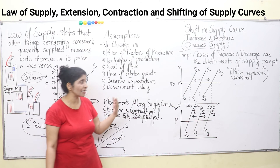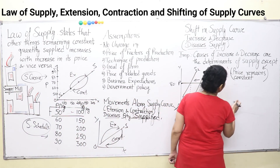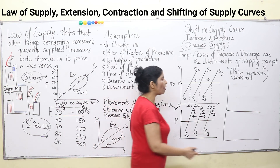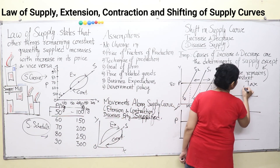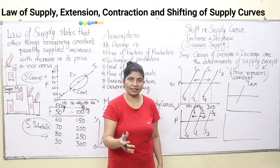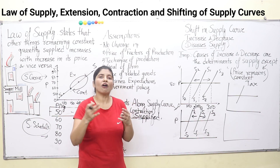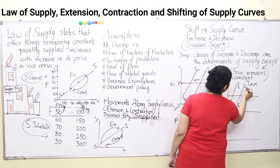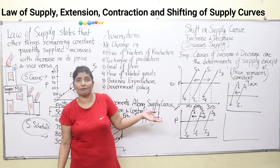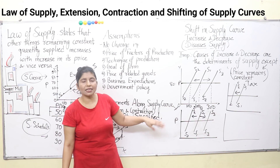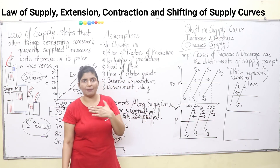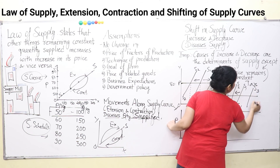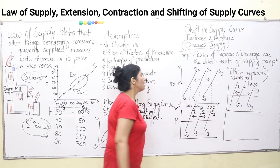Government policy has a heavy bearing on your supply curve. The government does two types of things affecting your supply: one is subsidy and another is taxation. For taxation — if this is your initial supply curve and some type of tax is levied on your production, your production will become costlier. Your supply curve will shift towards the left, because you don't have enough finance to do your production. If some tax is uplifted, you will have better opportunity and better finance, you will produce more, and your supply curve will shift towards the right — a forward shift.